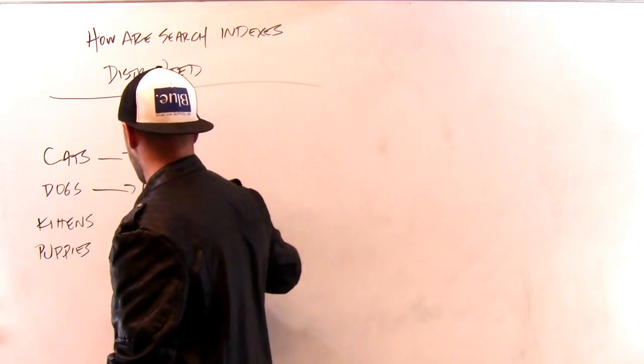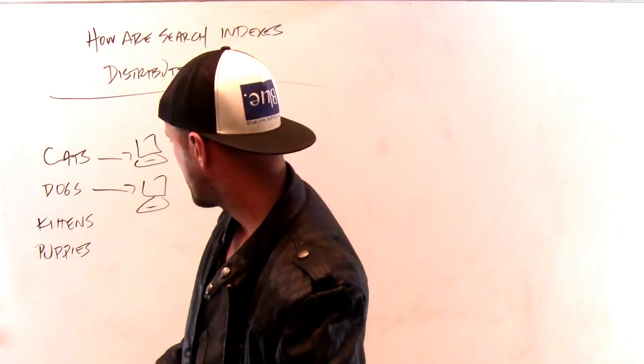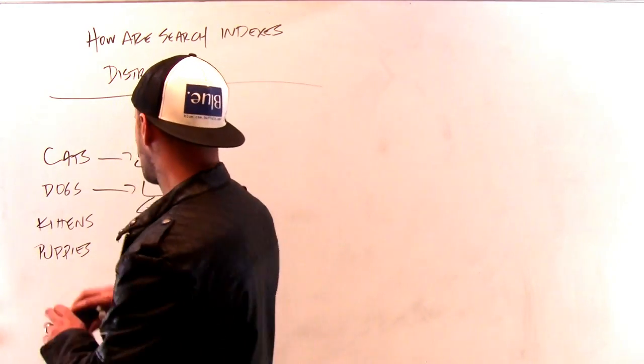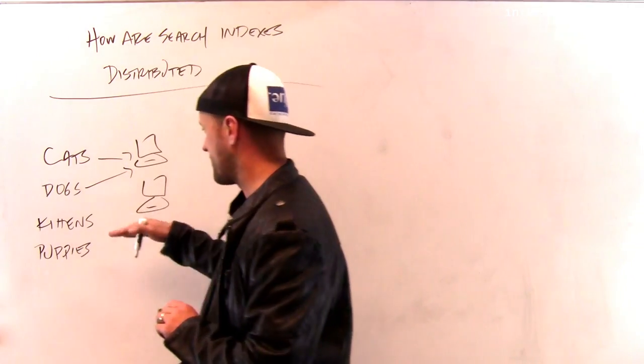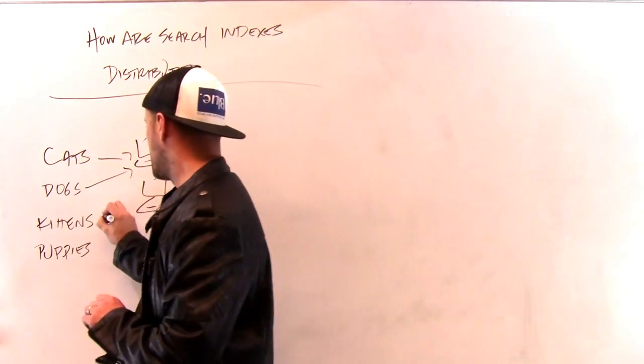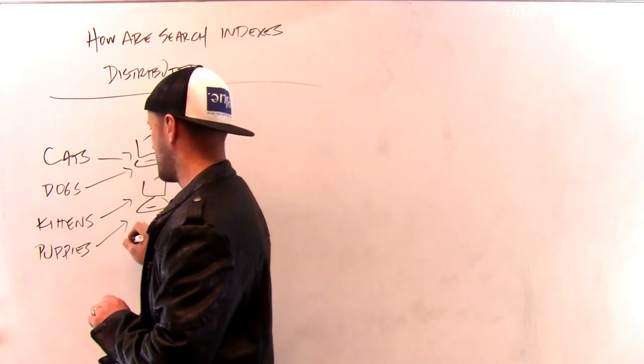This machine is responsible for all the queries about dogs. Actually, let's just use two machines to show a little bit more about how this would work. So I would break the index up into two parts. I would say that the top machine is responsible for the index for cats and dogs. The bottom machine is responsible for the index for kittens and puppies.